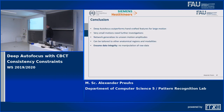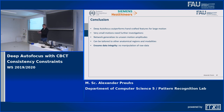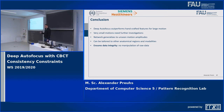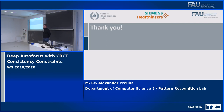In conclusion, we can outperform handcrafted features for large motions. Entropy actually performs well for very small motions such as jitter compensation, while our network does not perform as well there since it is not trained to capture a perfectly motion-free state. We can tailor the approach to other anatomical regions and ensure data integrity, which is important for a learning-based approach. Thank you for listening.